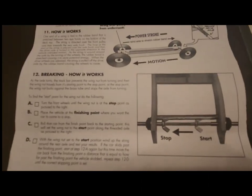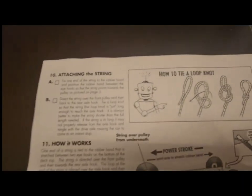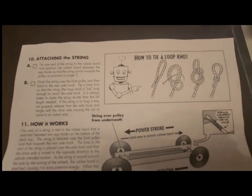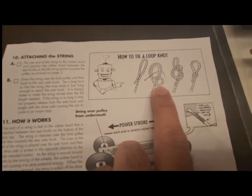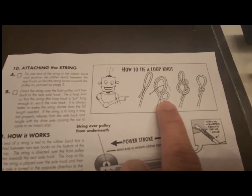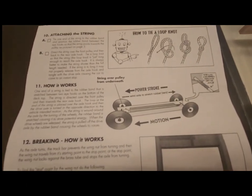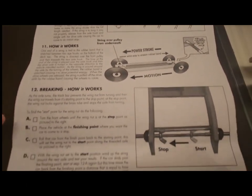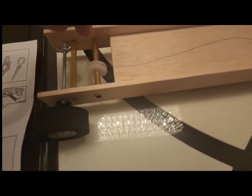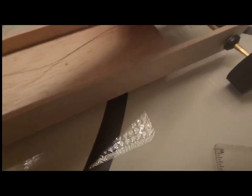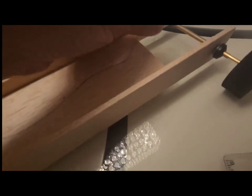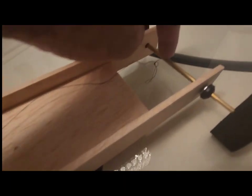These are the ending steps. The string needs to - we need to tie a loop knot at the end of the string. I'll just go over the steps how it works. This particular string - we tie a loop knot and there will be a zip tie axle hook which is also called an axle hook.